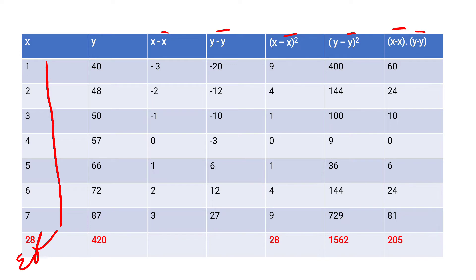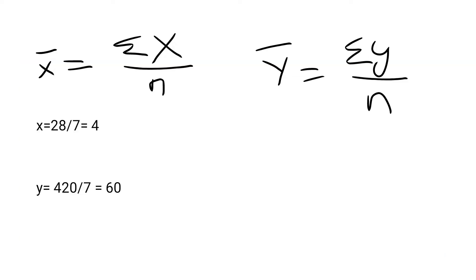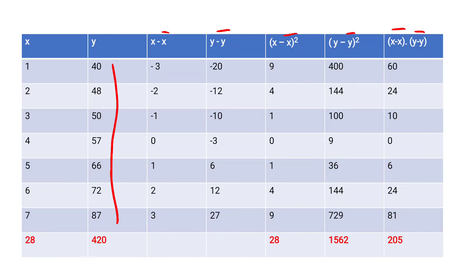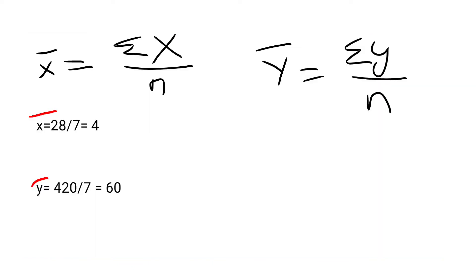Σx = 28, so x̄ = Σx / n = 28 / 7 = 4. For ȳ, add all the y values: 40 + 48 + 50 + 57 + 66 + 72 + 87 = 420. Σy = 420, so ȳ = 420 / 7 = 60. Therefore, x̄ = 4 and ȳ = 60.